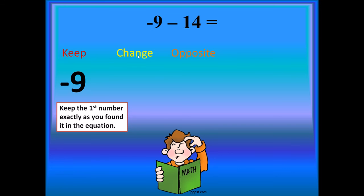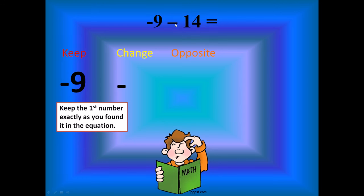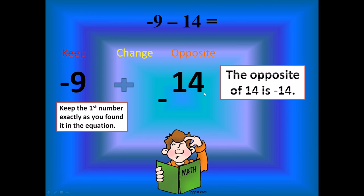Alright. Change. What do we change? We're going to change the subtraction sign to addition. So it's no longer subtraction. It is now an addition problem. Why? Because we like addition. So we have keep, change, and I have to do the opposite. This is positive 14. Okay. The opposite of positive 14 is negative 14.